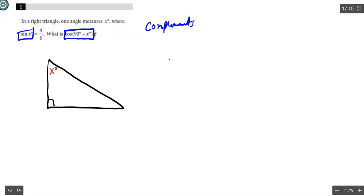So the sine of x degrees is 4 over 5. Remember, sine is opposite over hypotenuse. So this is your opposite number, and this is the hypotenuse. If the sine of x is 4 over 5, well, the cosine of 90 minus x...